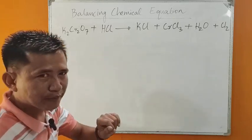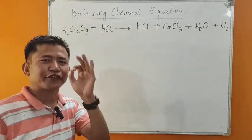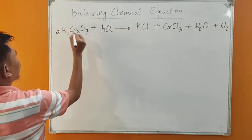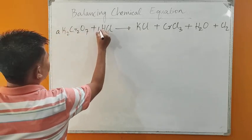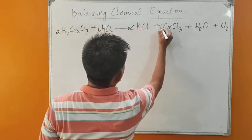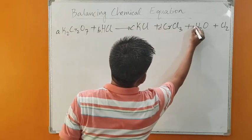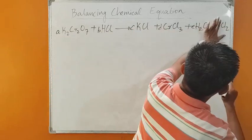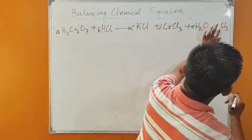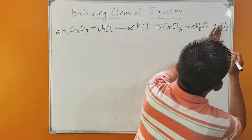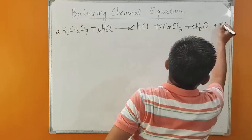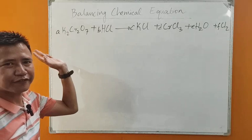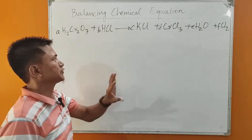To balance this chemical equation, the first step is very simple. Just write A, B, C, D, E, and F — depending upon the number of compounds, you keep on writing the English alphabet. First step is finished.